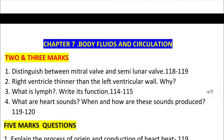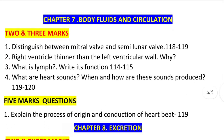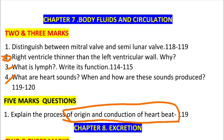Chapter 7 covers body fluids and circulation. Key questions include: why is the right ventricle thinner than the left ventricle, lymph dysfunction, how heart sounds are produced, and the electrical conduction of the heartbeat. These are very important detailed questions.